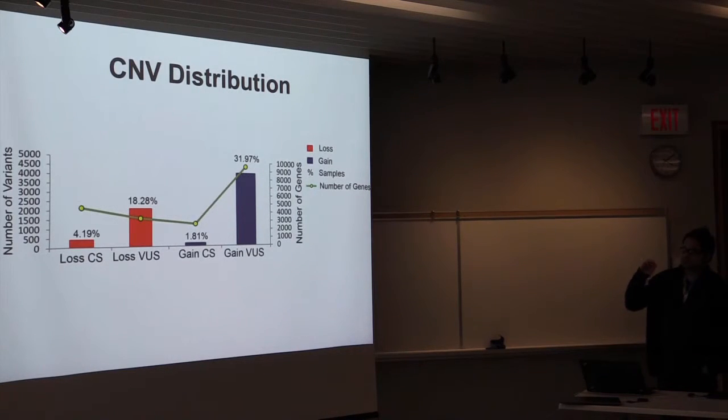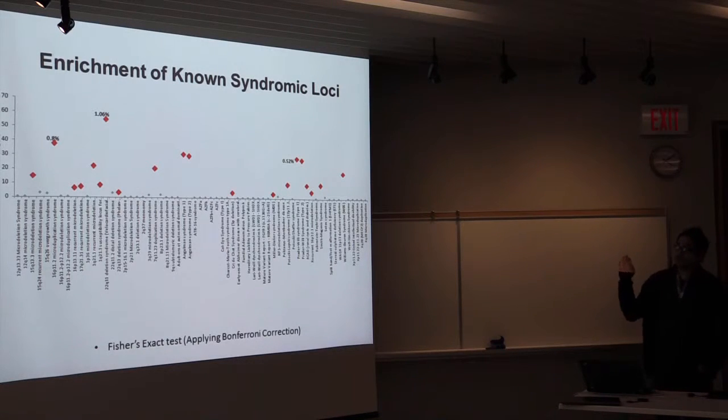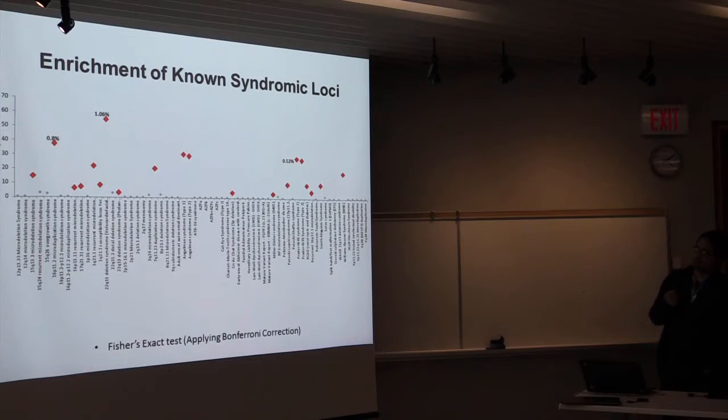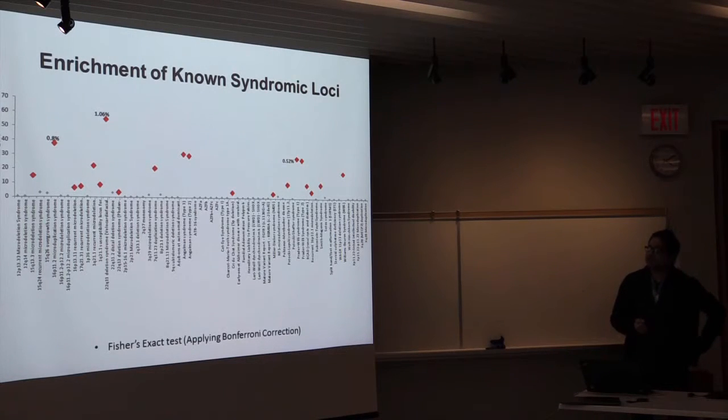This is the diagram of the whole data. About 5% of the patients are diagnosed with a clinically significant loss. VUS variants are about 18% for loss, and gain is about 1.8% clinically significant, whereas 31% gain are VUS because for gain it's hard to determine the pathogenicity. We did a screen of the known syndromic loci to see what syndromes in our 10,000 cases are enriched. It looks like there's 1% - the one region that reached 1% is 22Q11 deletion and duplication. And then there's a well-known region like 16P11.2 that is about 0.4%. So it is a mix of different syndromes, this whole cohort.